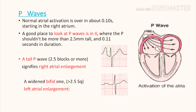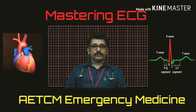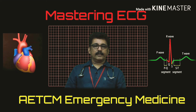A very tall P-wave — more than 2.5 blocks — in lead 2 indicates right atrial enlargement. A wide, bifid P-wave in lead 2 indicates left atrial enlargement. Remember: tall P-wave means right atrial enlargement, wide bifid P-wave means left atrial enlargement.